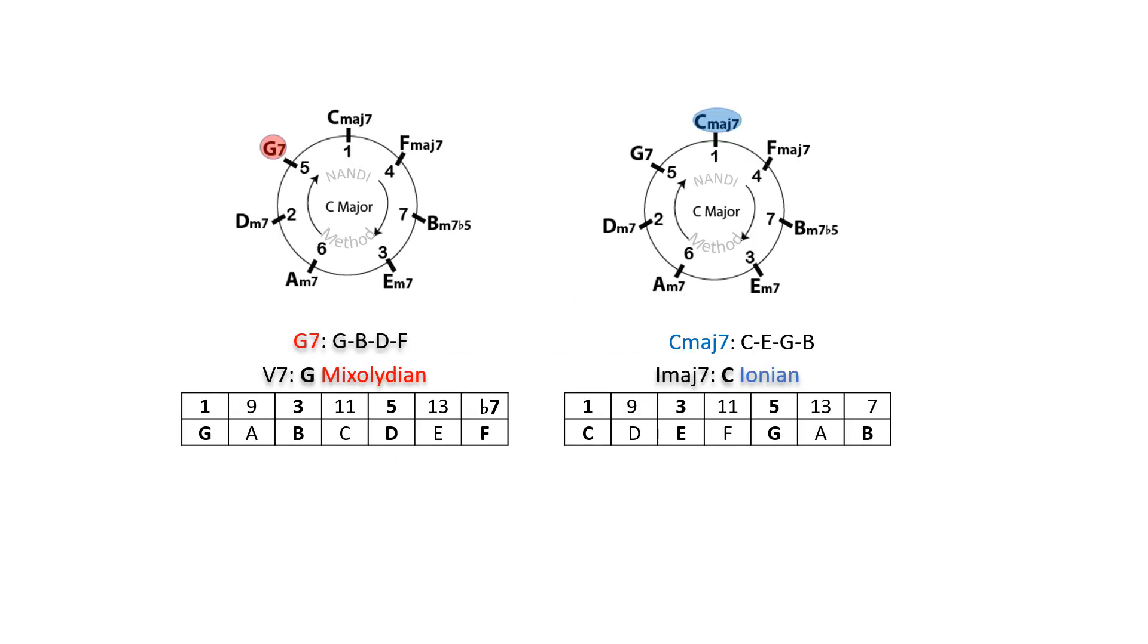The chord scale for G7 is G mixolydian, the fifth mode in C major, which includes the chord tones along with the remaining notes from the C major scale.